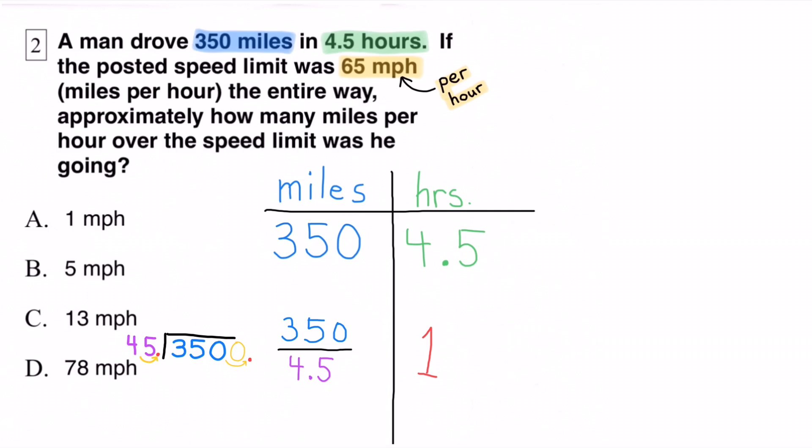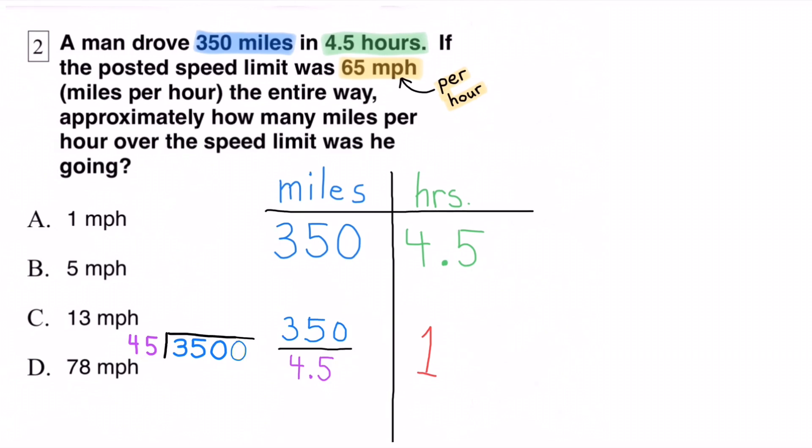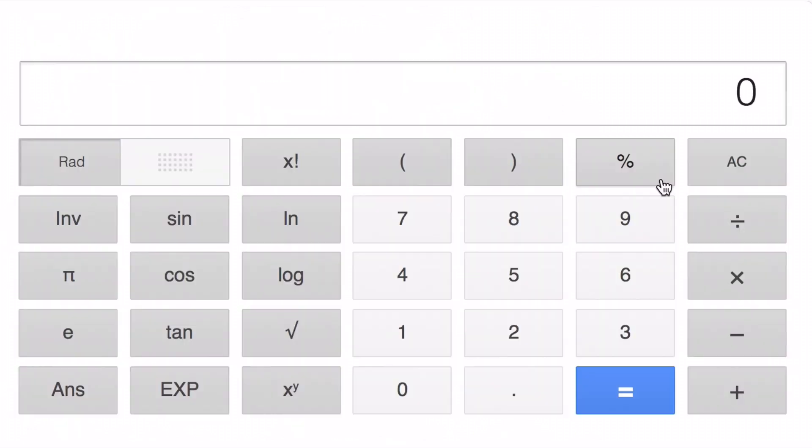Changing it from 4.5 to 45 makes that number 10 times greater. And since you made the 4.5 ten times greater by moving the decimal one place to the right, you'd also have to do that to 350. Move that decimal one place to the right, making it 10 times greater, which is 3,500. Now the division problem reads 3,500 divided by 45, and that's the same as 350 divided by 4.5.